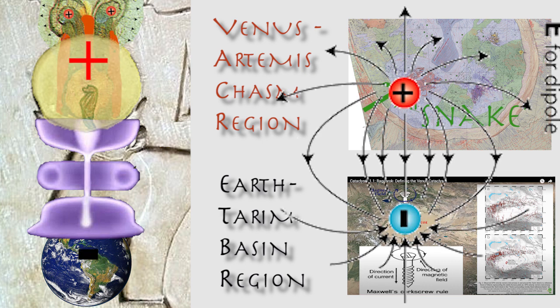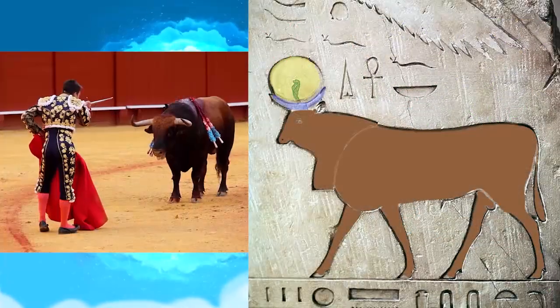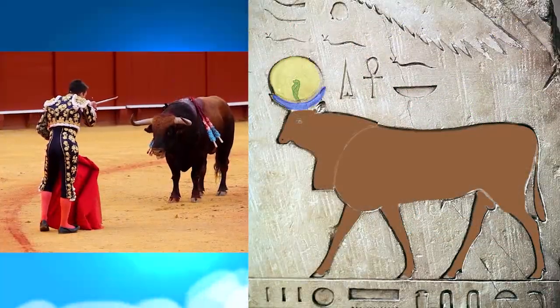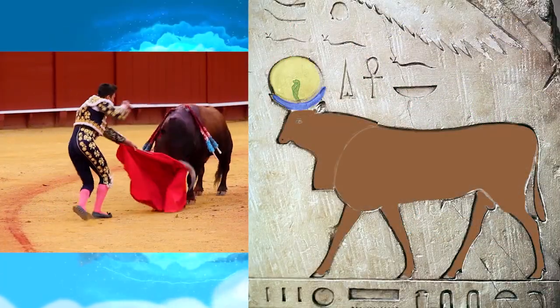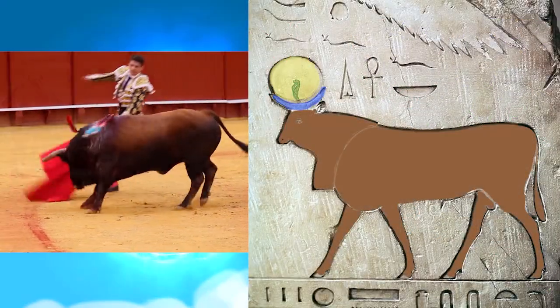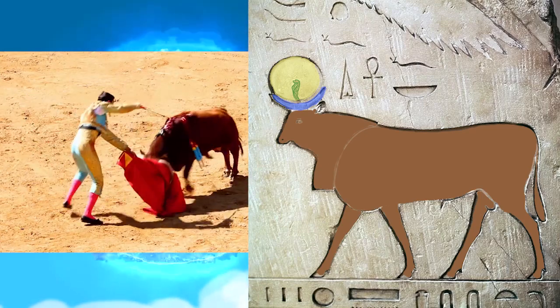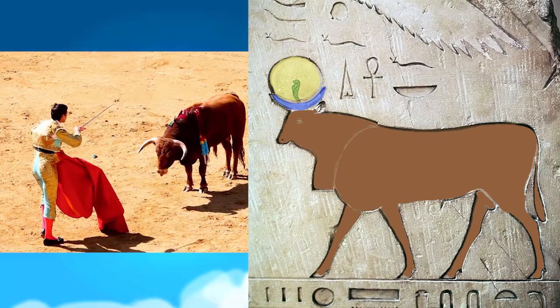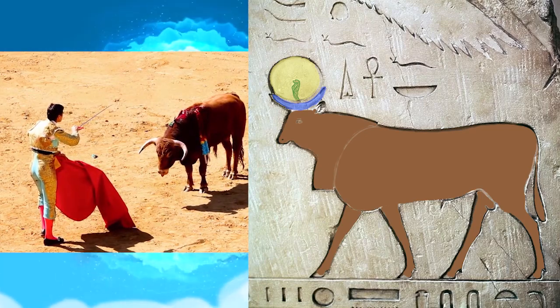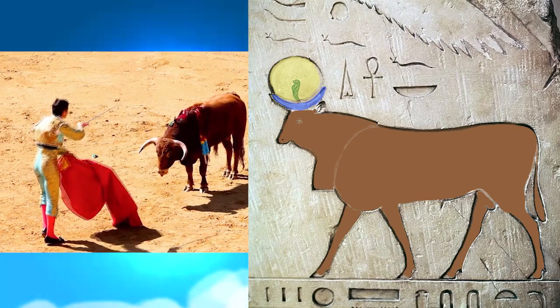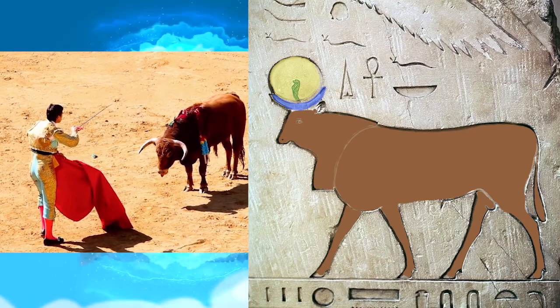So why are all these items attached to a giant bull? Bulls charge. And they don't charge backwards in a negative direction — bulls charge forward in a positive direction.